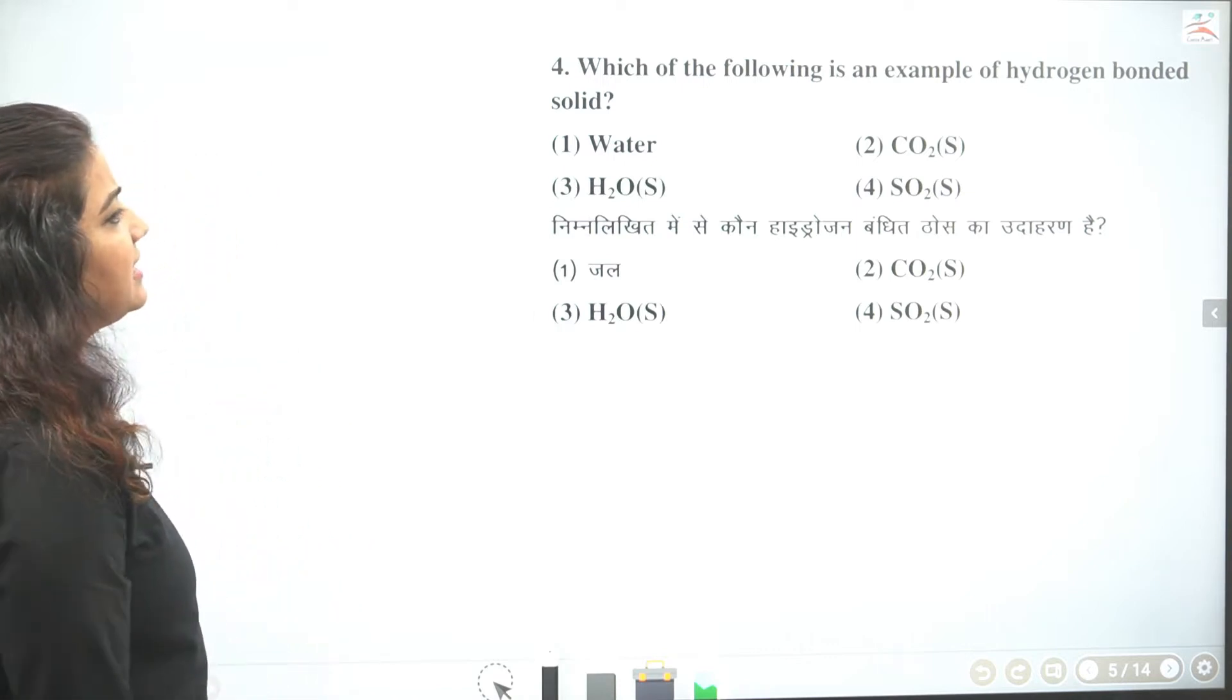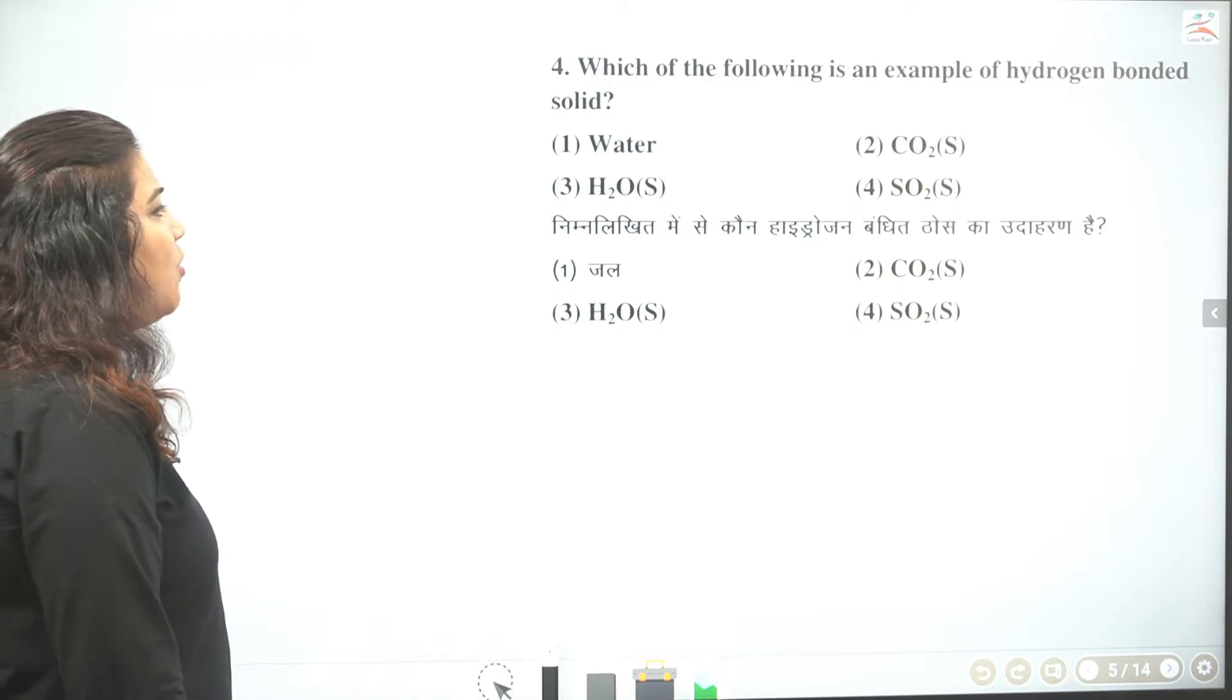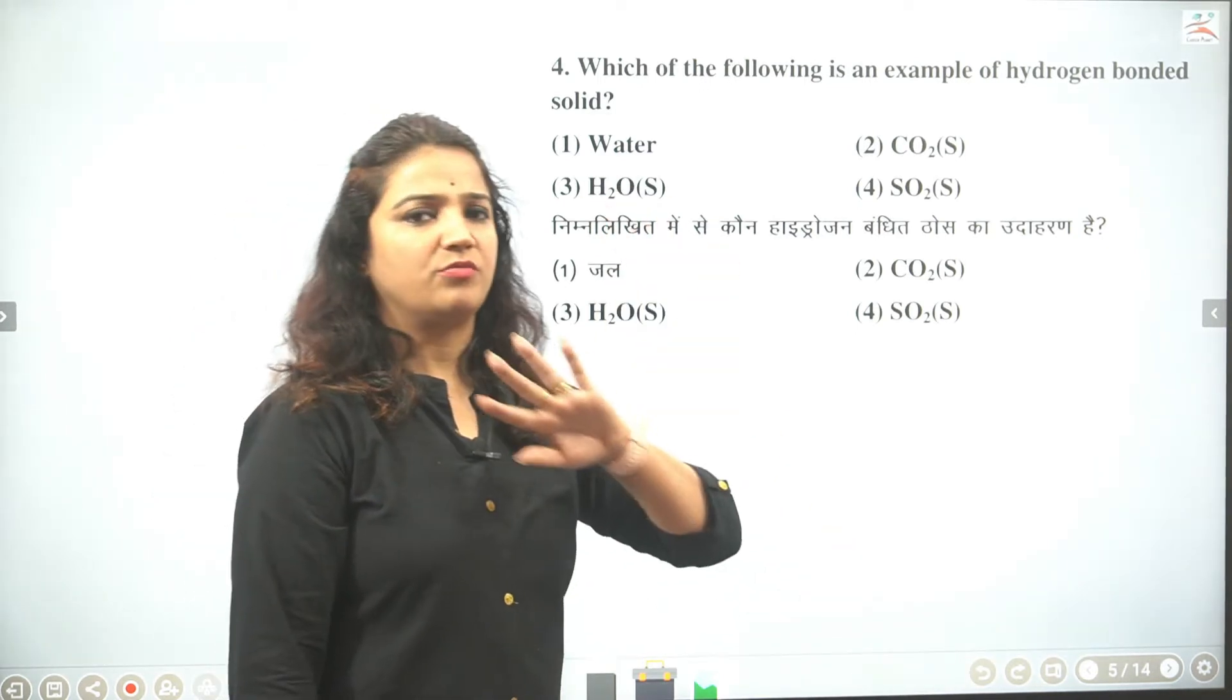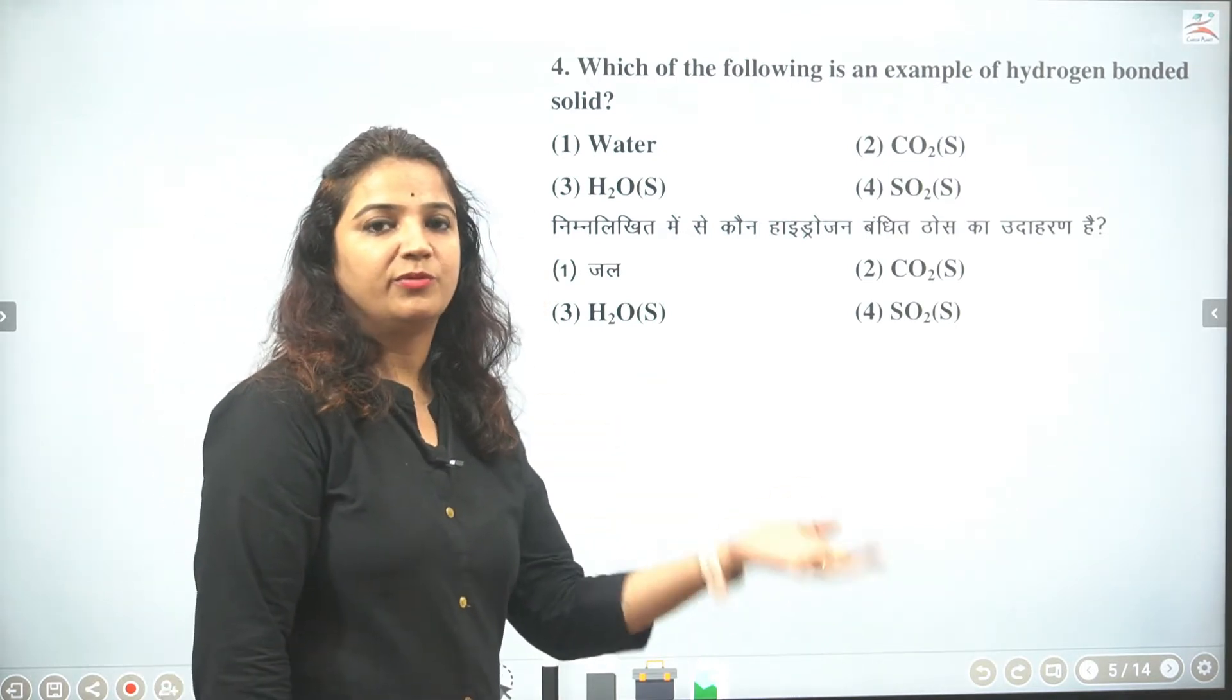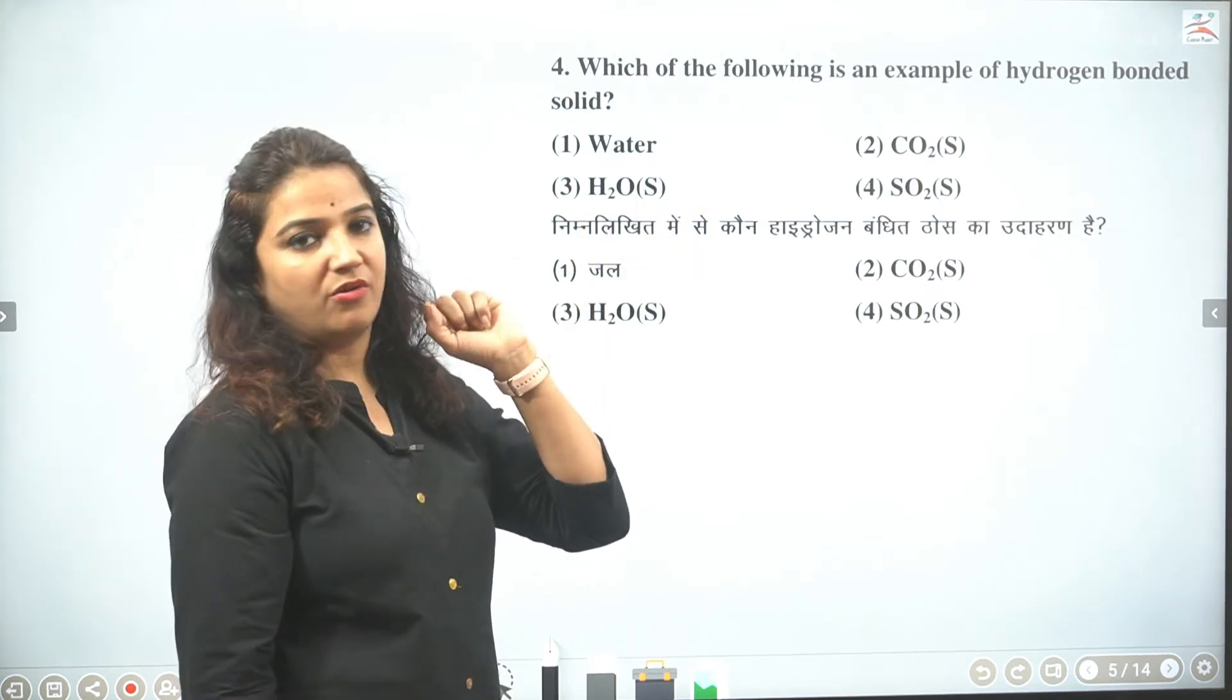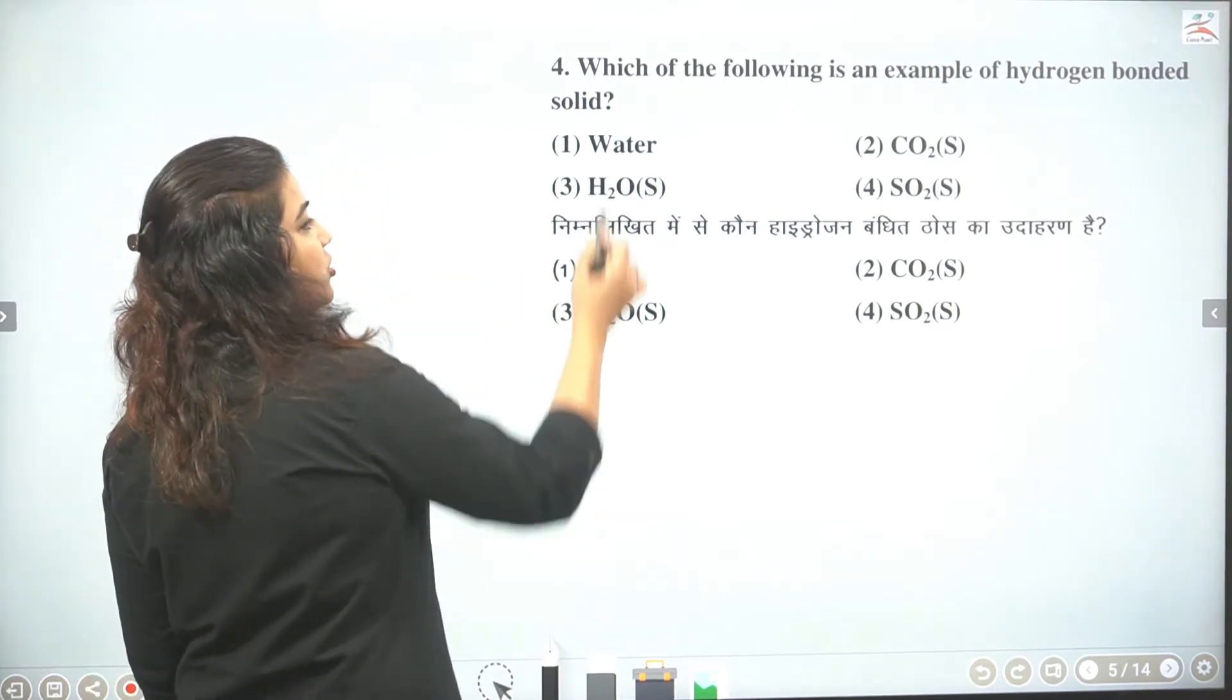Then which of the following is an example of hydrogen bonded solid? Toh baccho 4 solid in mein batana hai hydrogen bond kis mein hai. Ab dekho. CO2 aur SO2 mein toh hydrogen hi nahi hai. Toh hydrogen bond ki ummeed karna hi galat hai. Ab water or H2O, toh water toh liquid hai na. Toh liquid thodi na puchha hai.